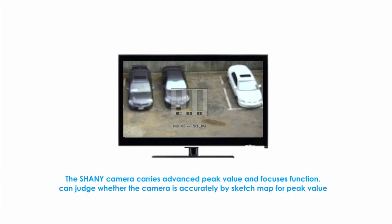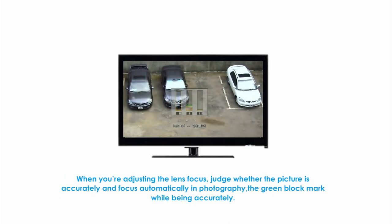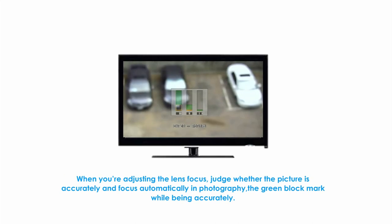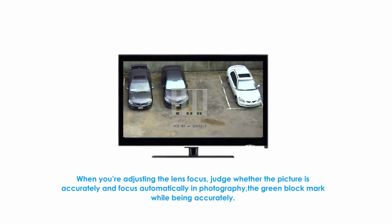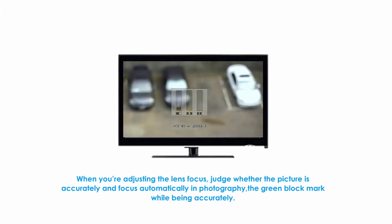The Shiny camera carries advanced peak value and focus function. It can judge whether the camera is accurate by a peak value indicator. When you are adjusting the lens focus, it judges whether the picture is accurate and focused automatically in photography. The green block marks when it's accurate.